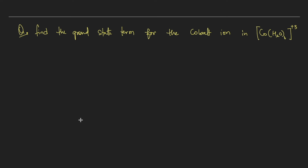As mentioned at the start, I'll give you a homework question. In the same way, find the ground state term of the cobalt ion in the complex Co(H₂O)₆³⁺, where the oxidation state of cobalt is +3. Let me know in the comments what ground state term you obtained. I'm not giving you the options — treat it as an assignment. In the next video, Part 2 of this series, I will tell you the correct answer.